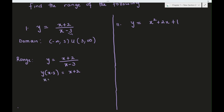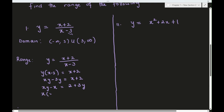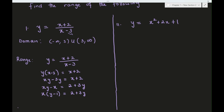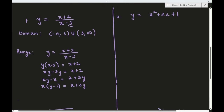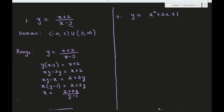Cross-multiplying gives us xy - 3y = x + 2. Rearranging to collect x terms: xy - x = 2 + 3y. Taking out the common factor of x gives x(y - 1) = 2 + 3y, so x = (2 + 3y) / (y - 1).